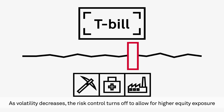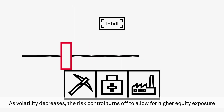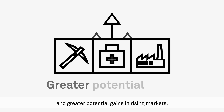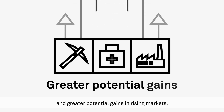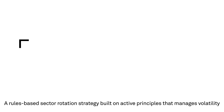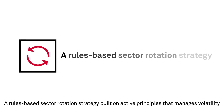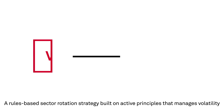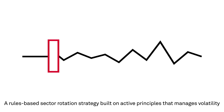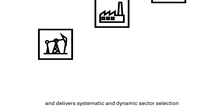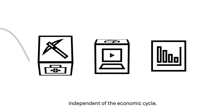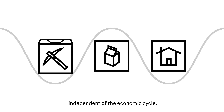As volatility decreases, the risk control turns off to allow for higher equity exposure and greater potential gains in rising markets. The end result: a rules-based sector rotation strategy built on active principles that manages volatility and delivers systematic and dynamic sector selection independent of the economic cycle.